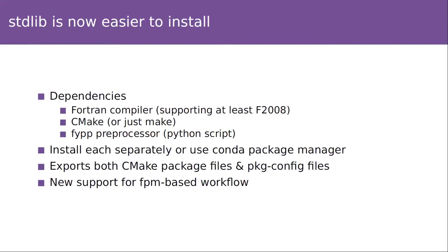Once you get the source from GitHub, you can build the standard library and run its test suite via make or CMake. When you install it, not only do you get a static or shared library to link, but you also get a package config file and a CMake package file. So if you use a make-based or CMake-based build system for your own projects, you don't have to worry about resolving paths and include flags — that's done for you. Of course, this is a lot more complicated than the ideal, which is just distributing the standard library as an FPM package.